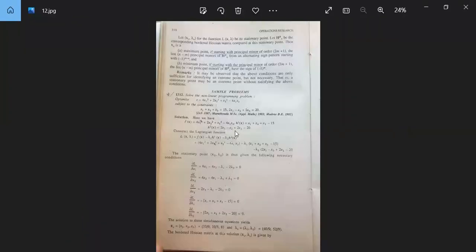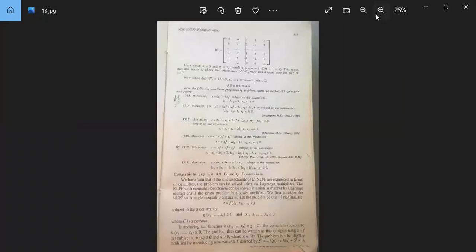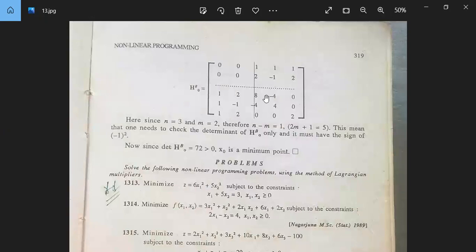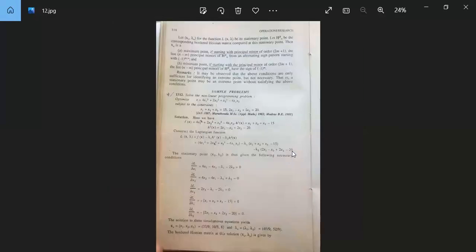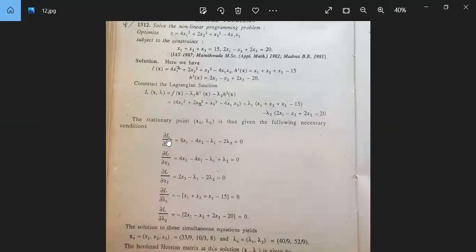See, this is your L. Del L by del x_1 is this one, and then we will get 8, so this is 8. With respect to x_2 and del by del x_3, with respect to x_2, that is the value where we have the diagonal elements V: 8, 4, and 2. Similarly, this is minus 4, so it will be minus 4.